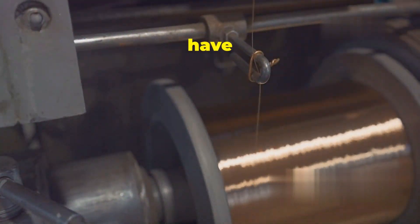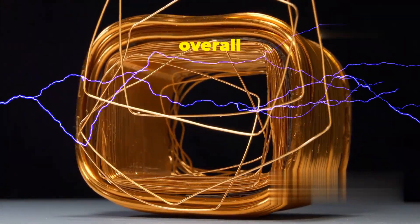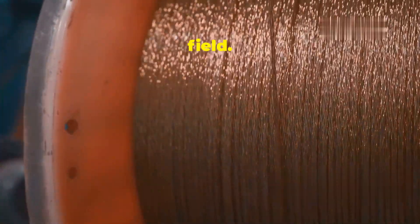The more loops we have in our coil, the stronger the magnetic field becomes. Each loop adds to the overall strength, making the electromagnet more effective. Next, we have the iron core, usually a soft iron rod, placed inside the wire coil. The iron core plays a crucial role in enhancing the magnetic field.